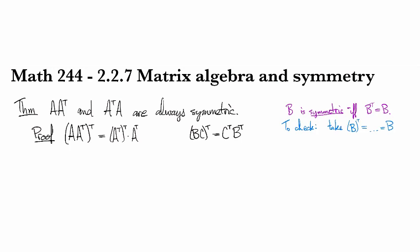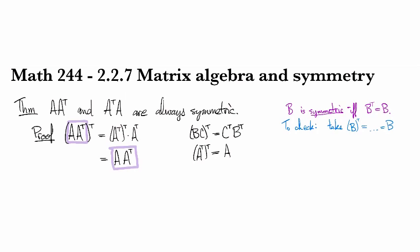And then we also saw last time that when you take something and you transpose it twice, you get back where you started from. So that would tell us that this first one is actually just A. And now we connect the dots. This thing that we started with by transposing is the same thing that we ended up with here. So we've just verified that A A transpose is symmetric, and we're done.